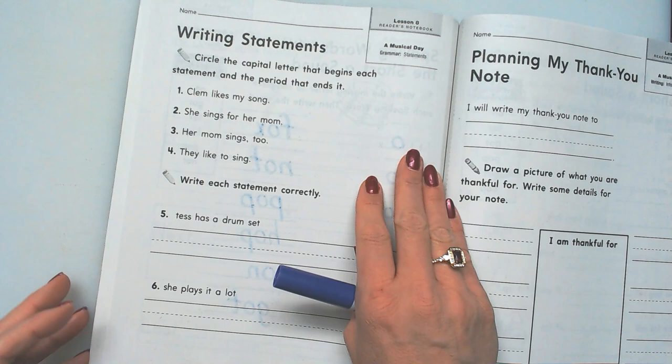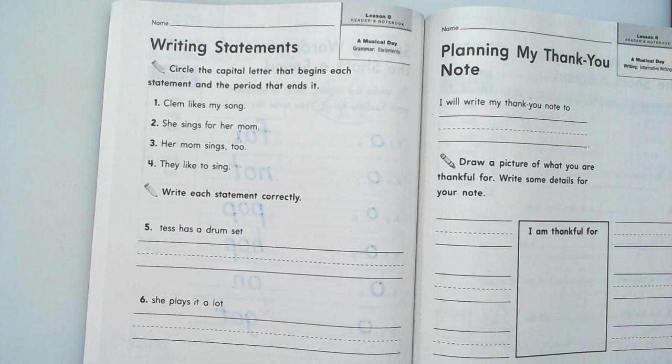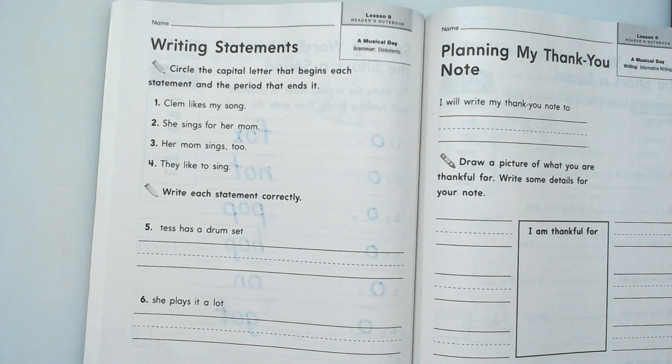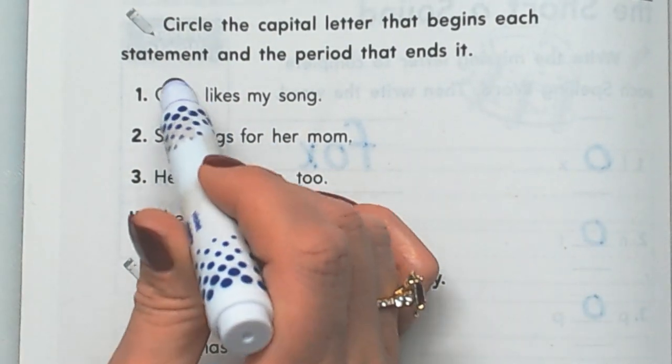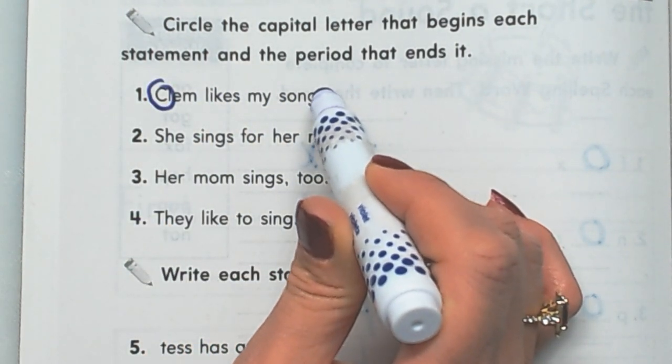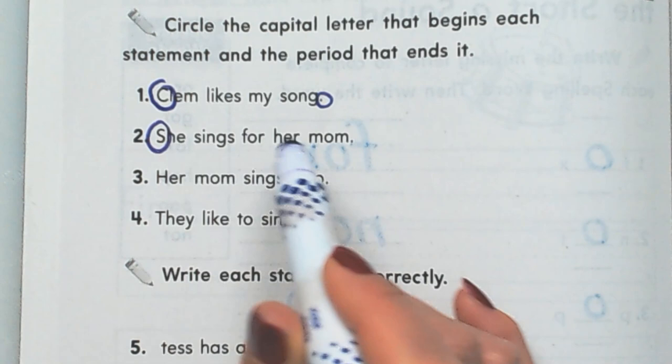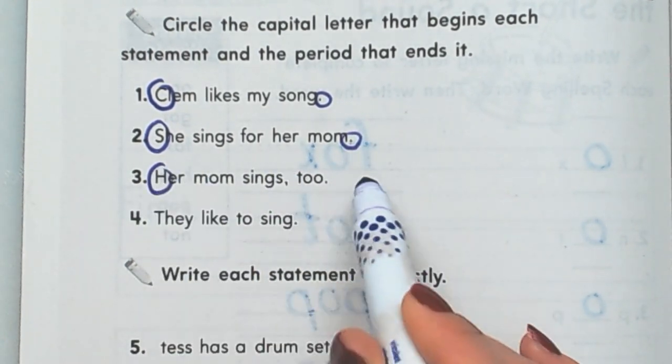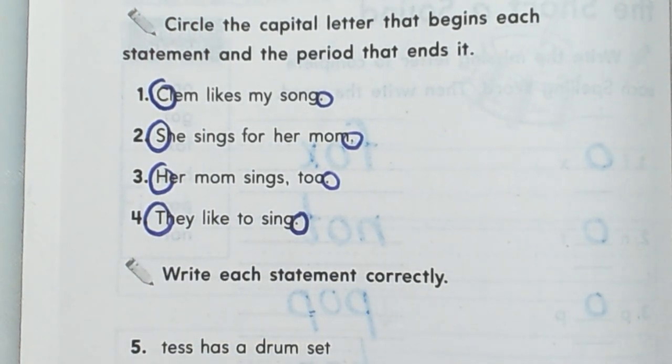So now we're back to our page. You're going to be so good at this. We just have to circle the capital letter that begins each statement, and that's going to go quick. Let me just make it super big for you. Okay, here we are. So we're going to circle the capital letter that begins each statement and we're going to circle the period at the end. So that's a statement. This is a statement. This is a statement. This is a statement. Just remember when you're writing sentences that are statements, they all begin with capital letters and end with periods.